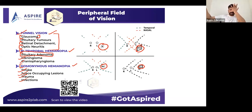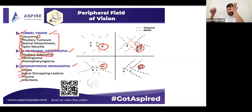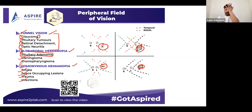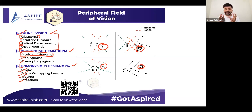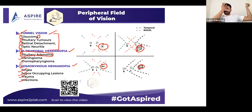When demonstrating tunnel vision: if you start from the temporal side and the patient says yes only when the pin is almost in front — temporal side is gone. Check nasal side — same thing, nasal is gone. Check the other eye — temporal is gone, nasal is gone. If all four quadrants (temporal and nasal for both eyes) are gone except straight ahead, that is tunnel vision.